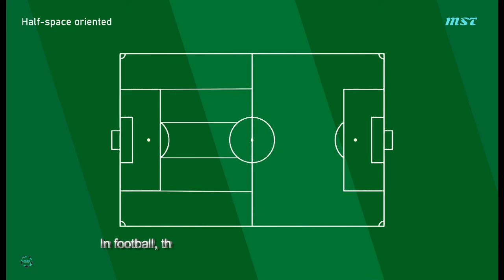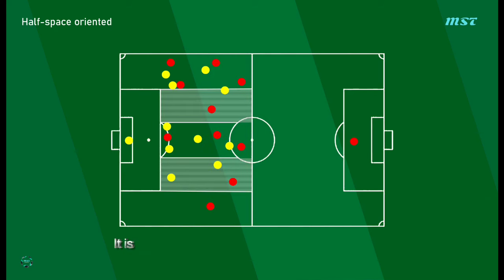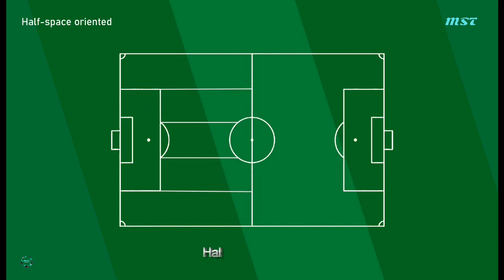In football, the term 'half space' refers to the area on the field that lies between the central zone and the wide areas. It's an important tactical concept used by teams to create space and exploit defensive weaknesses.